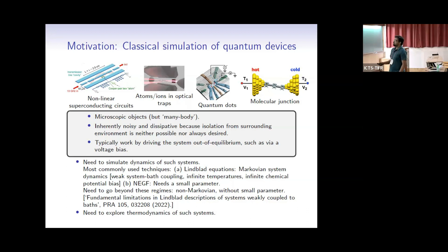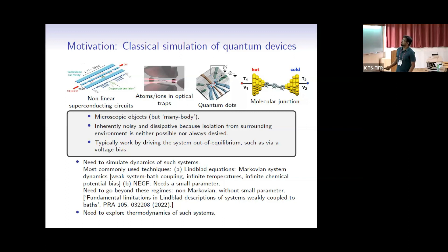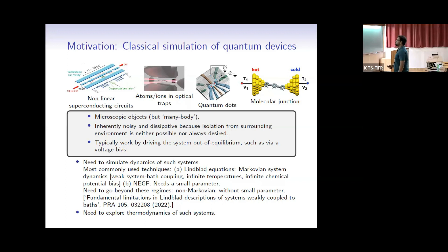The most commonly used technique is the Lindblad equation, which makes the assumption of Markovian dynamics. This assumption relies on weak system-bath coupling, or infinite temperatures or infinite chemical potential bias, and so on. Some of these things may not be true in experiments. If you do not have the Markovian assumption, one of the most standard techniques is non-equilibrium Green's functions. If you have only a linear system — free fermions and so on — this works very well. If you have any non-linearities, you need a small parameter and have to set up perturbation theory.